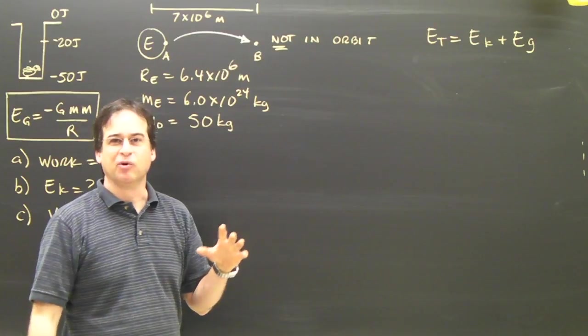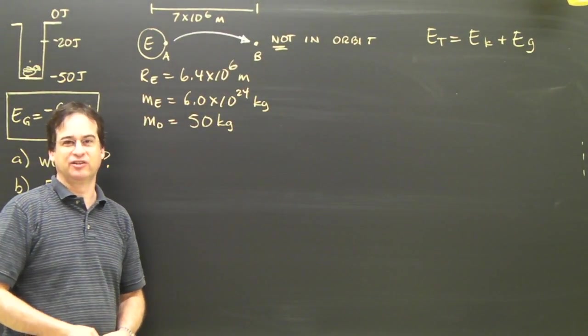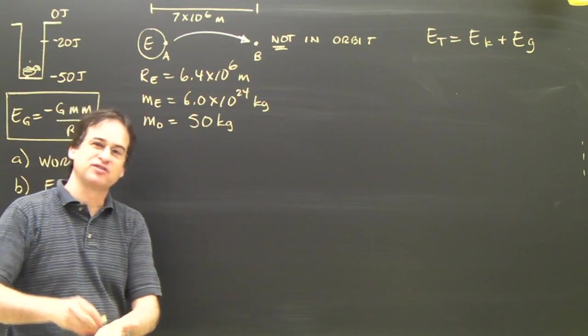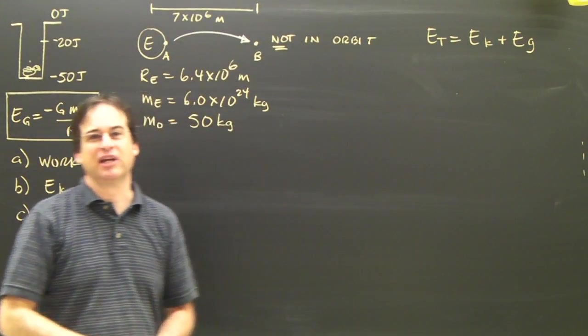You've probably learned at this point about gravitational energy, that when something's moving up or down, you can use gravitational energy. The thing is, when things are moving very high on the Earth, you cannot use the formula MGH.